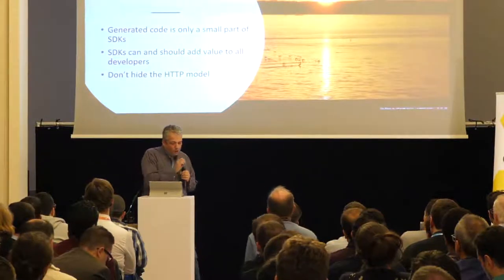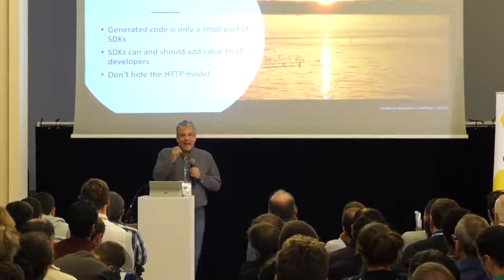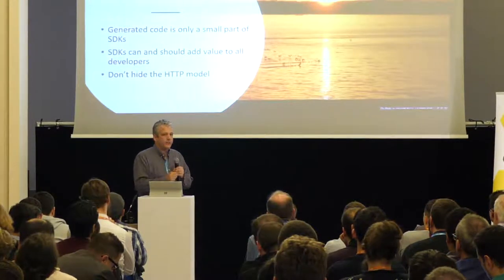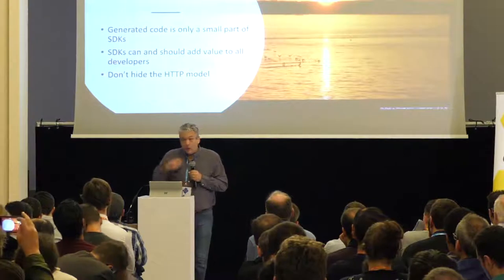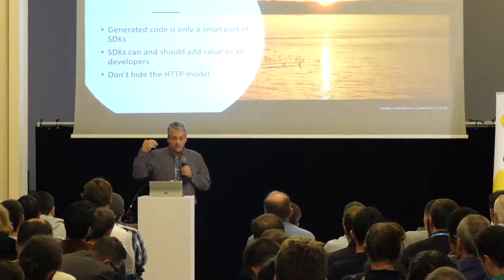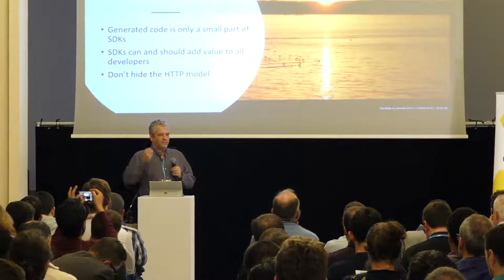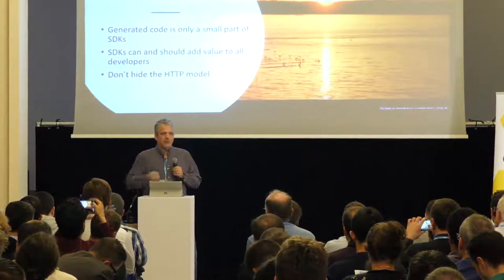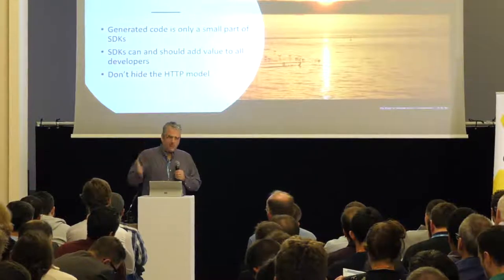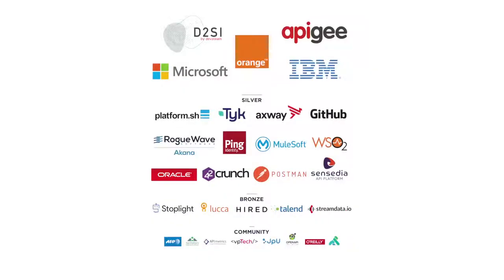To conclude: when you're building SDKs, generated code can actually be only a small part of the SDK. It's the generated code that is tough to get really good quality — but that's okay, because it only needs to be a small part. We should be building SDKs that bring value to all levels of developers, not just the getting-started experience. We can do that by building things in a more flexible way. And last but not least: don't hide the HTTP model. It is extremely valuable and people need to be able to access it in certain scenarios. Make sure people can peel away the layers and don't have to throw your SDK away when they hit an edge case. Thank you very much.